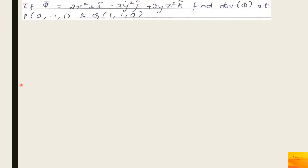Next problem: if φ̄ = 2x²z·î − xy²·ĵ + 3yz²·k̂, find the divergence at two points: P(0, −1, 1) and Q(1, 1, 0).